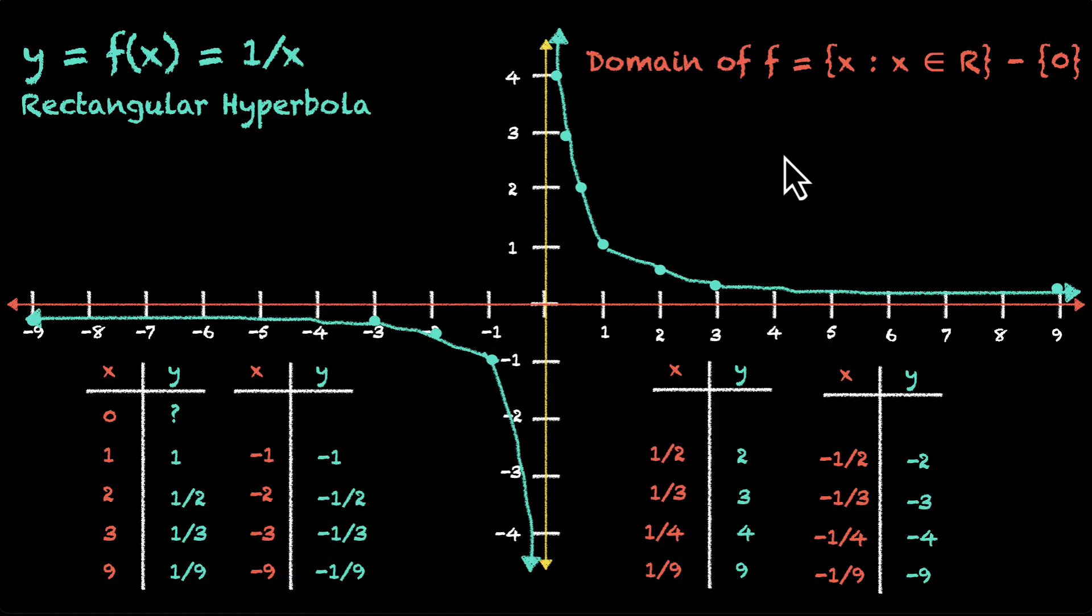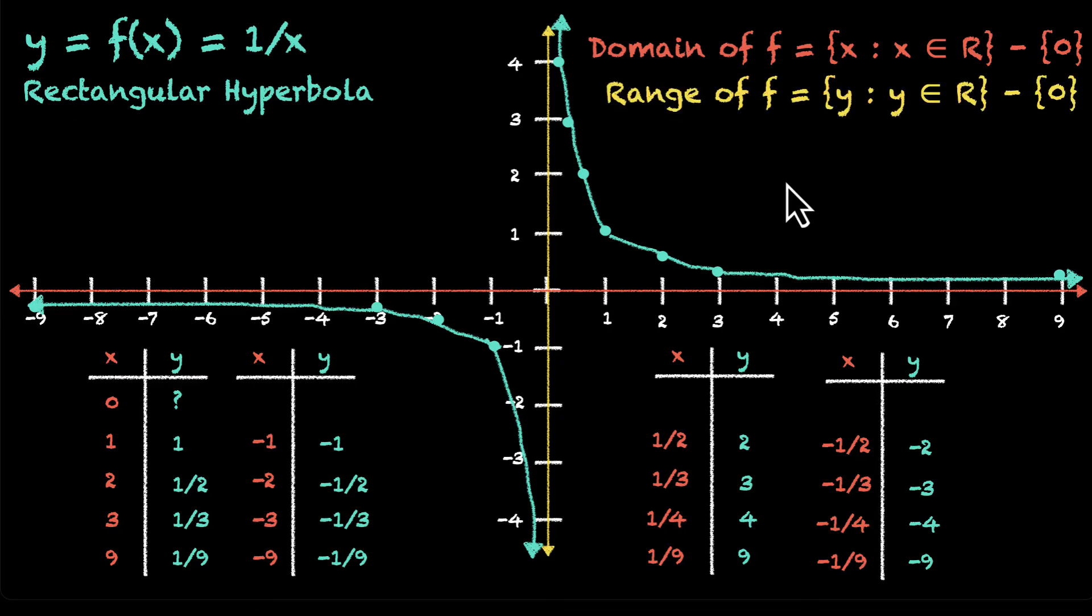What about the range? Well, this graph is very identical, very symmetrical. The range is also the same. y also takes all positive values and all negative values. The only value that y does not take is 0. There is no input that you can have for which you have an output of 0.